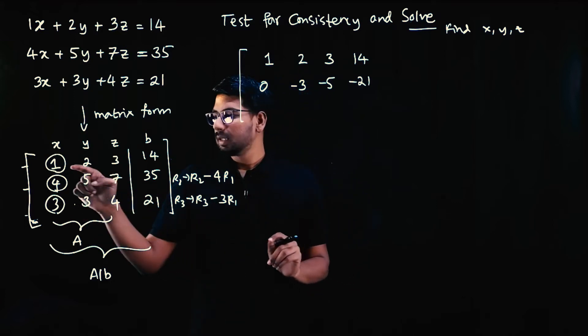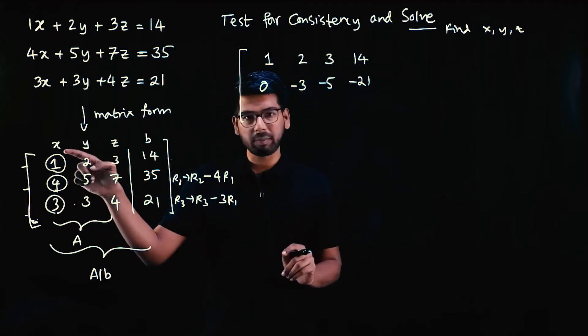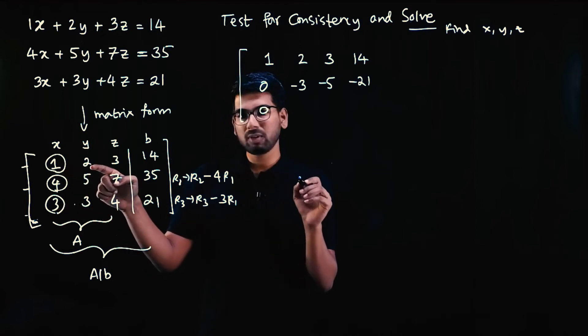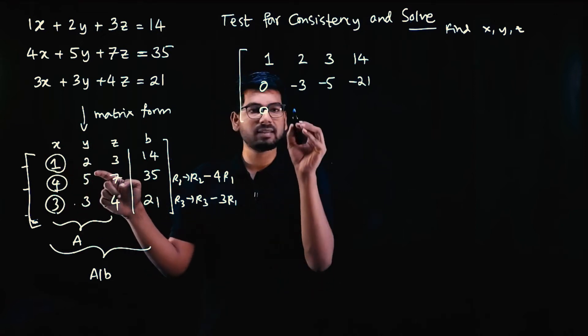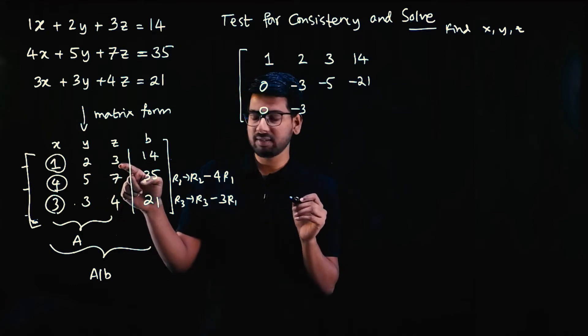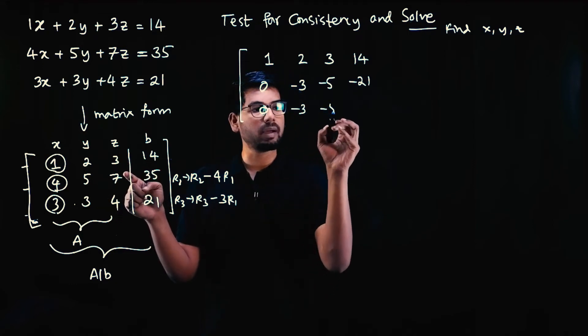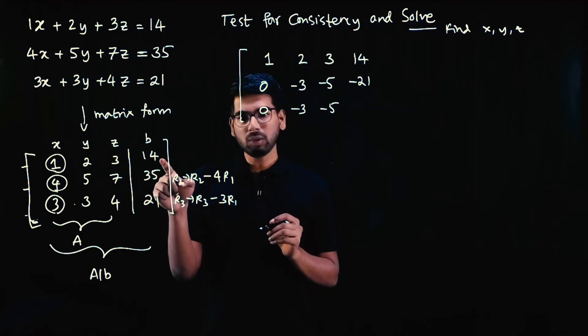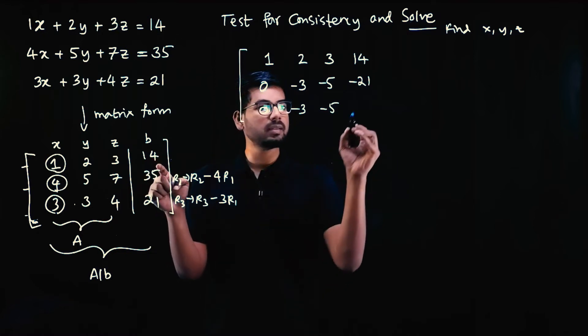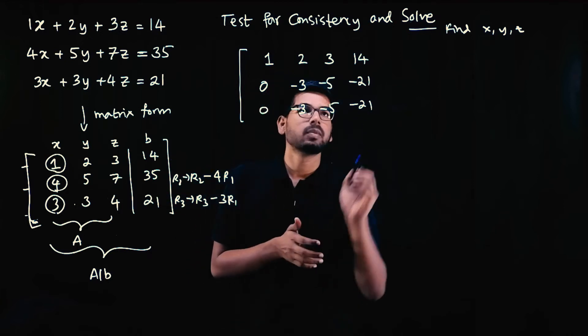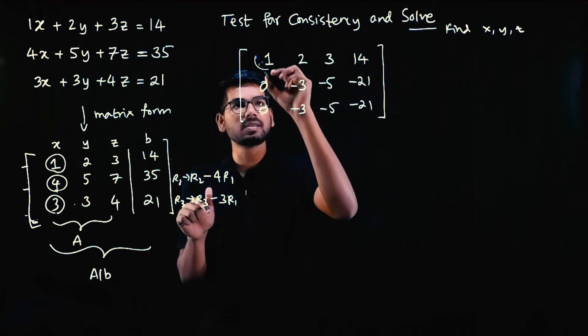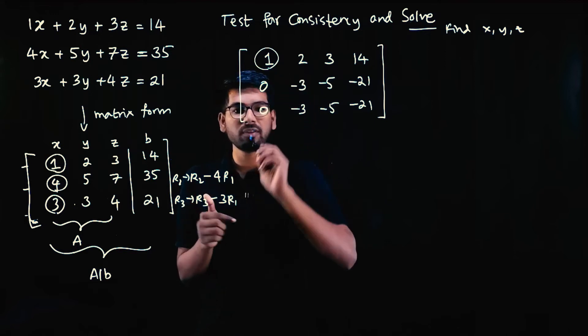Third row: multiply by 3 and subtract. 3 times 1 is 3, 3 minus 3 is 0. 3 times 2 is 6, 3 minus 6 is minus 3. 3 times 3 is 9, 4 minus 9 is minus 5. 3 times 14 is 42, 21 minus 42 is minus 21. After first set of row operations, we need to make this element 0.